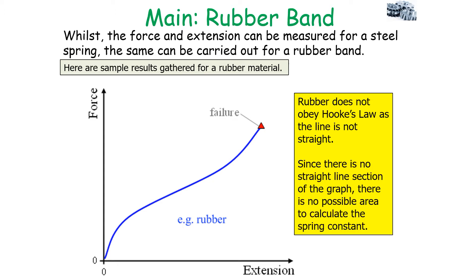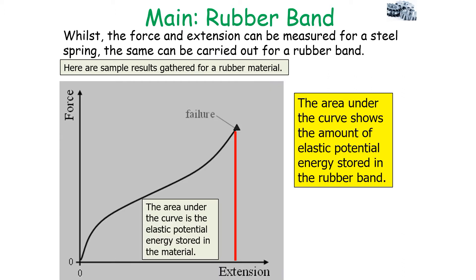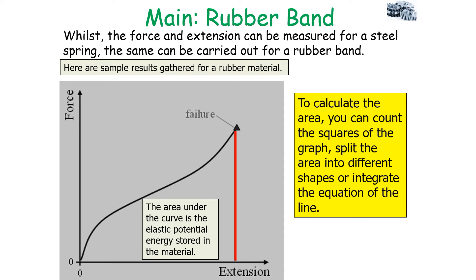Since there's no straight line section of the graph, there's no possible area to calculate the spring constant, because it needs to be the gradient of a straight line part of a force extension graph. The area under the curve for a force extension graph shows the amount of elastic potential energy stored in the rubber band. To calculate the area of this example, you can count the squares of the graph, split the area into different shapes, or possibly integrate the equation of the line.